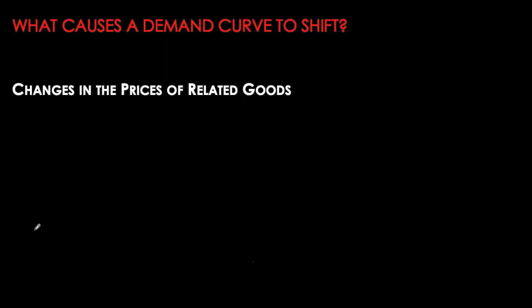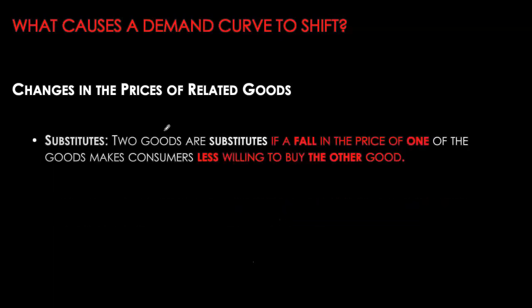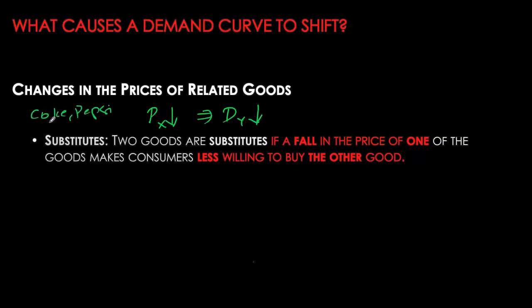So other than population, what are some other factors that cause the demand curve to shift? A very common factor is the price of a related good, which we can split further into the price of a complement or the price of a substitute. For substitutes, two goods are substitutes when they satiate the same desire, so if the price of one goes down it will cause the demand for the other to also go down. If we're looking at coke and pepsi as the two goods, and the price of coke is going down, will I consume more coke or more pepsi?